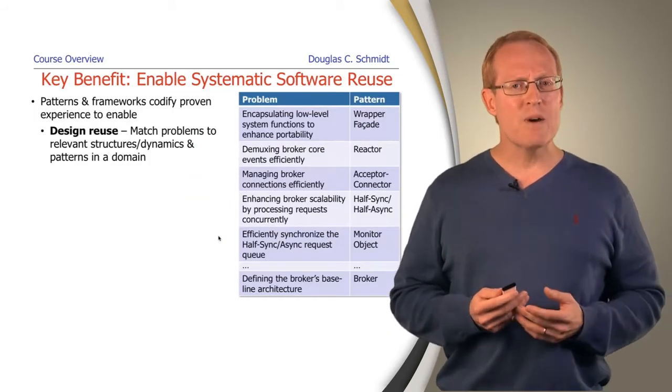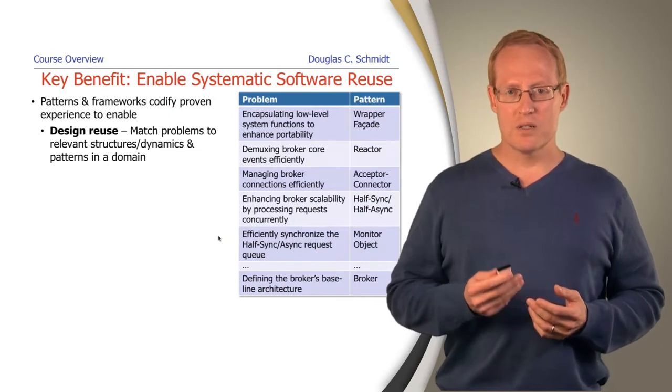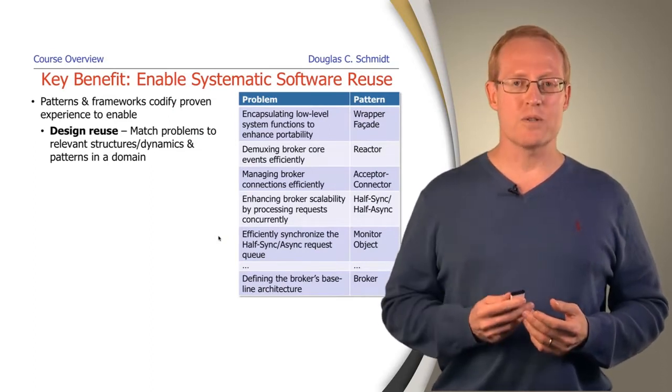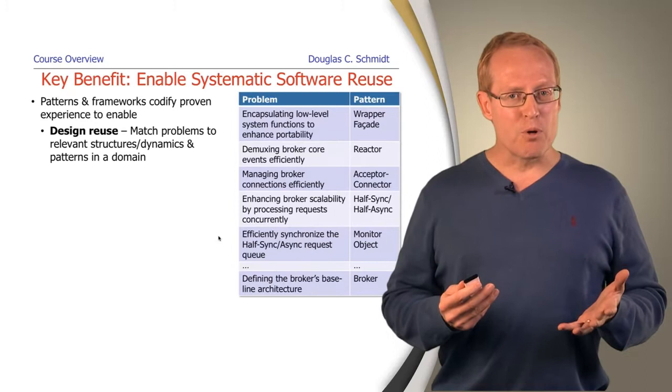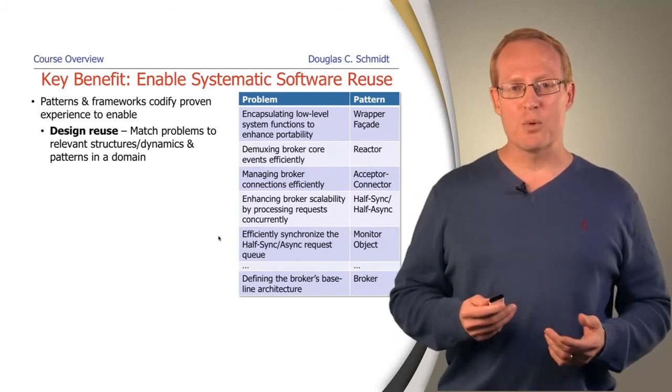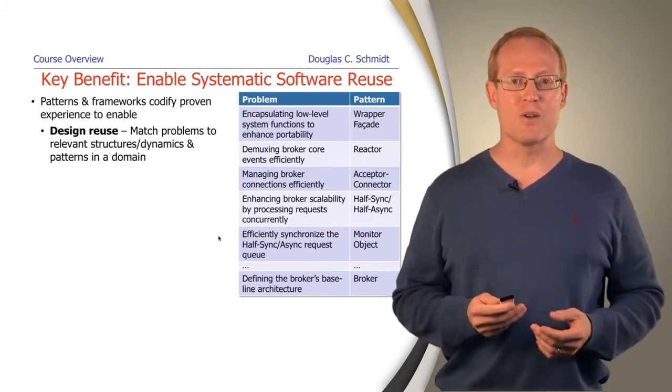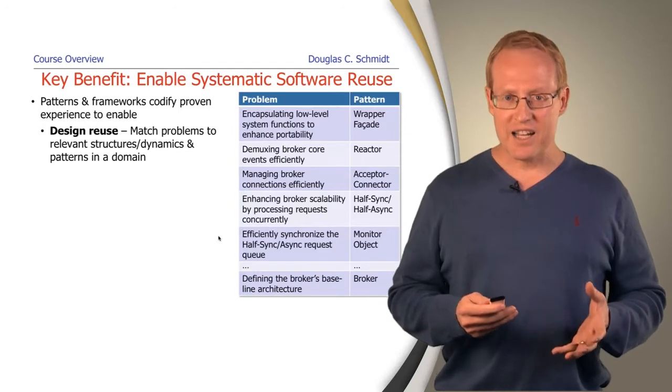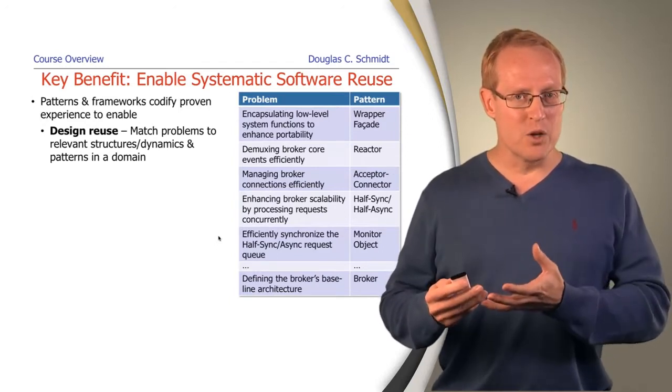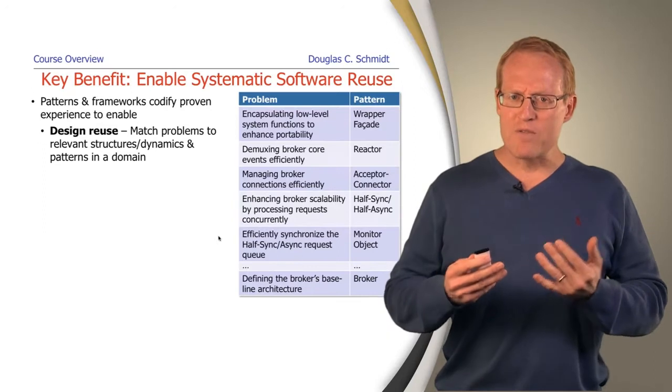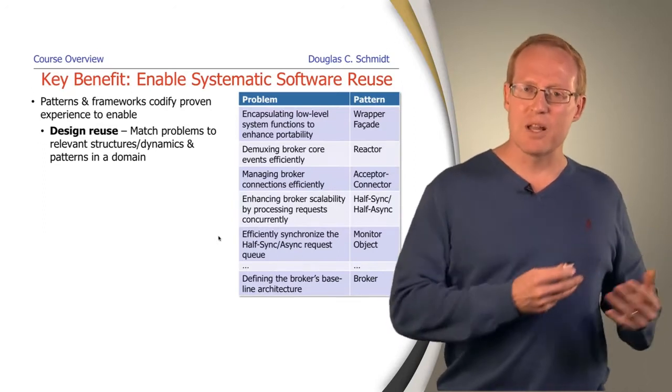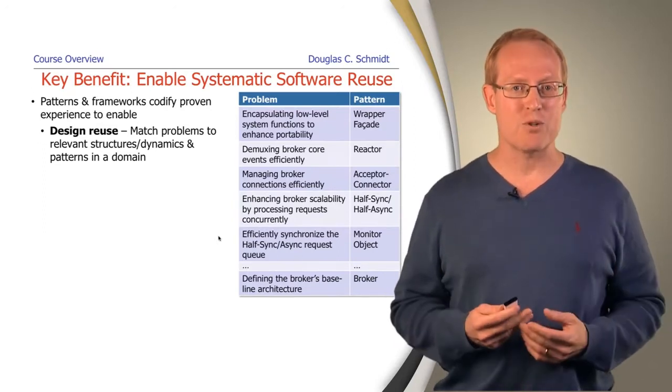So what are some of the key benefits of patterns and frameworks? Systematic software reuse. If you've done any type of programming at all, you're probably familiar with the concept of opportunistic reuse, the kind of ad hoc cutting and pasting we do when we're building a new piece of software and we remember we've got some other stuff that was along the same lines we could leverage without having to write it from scratch.